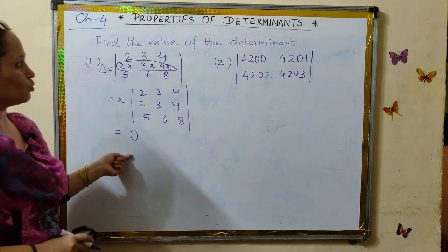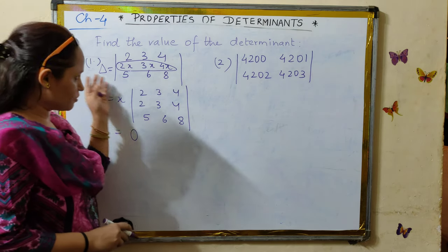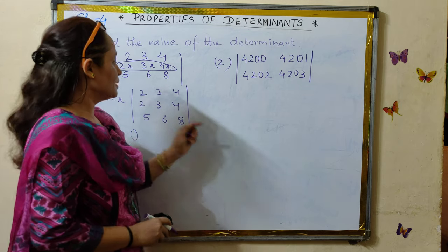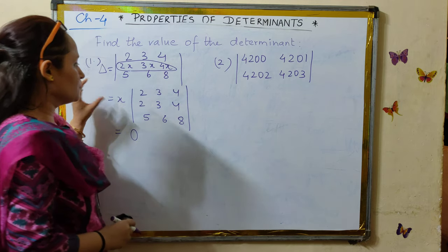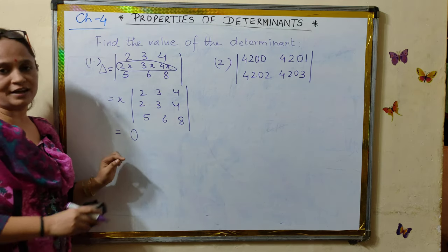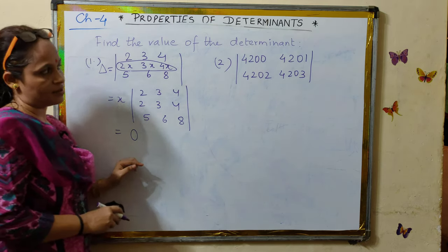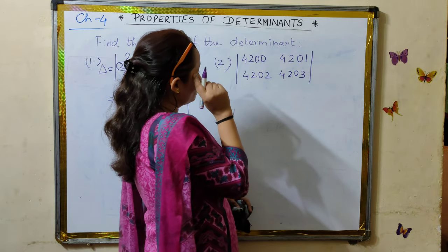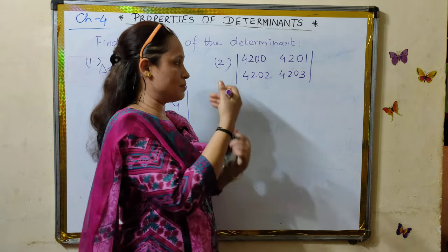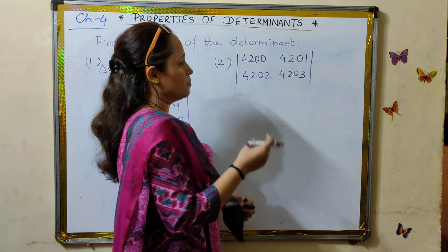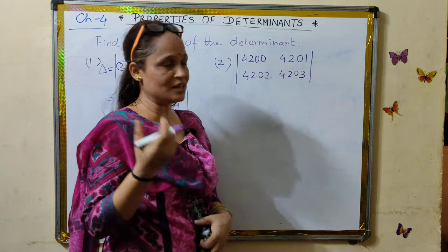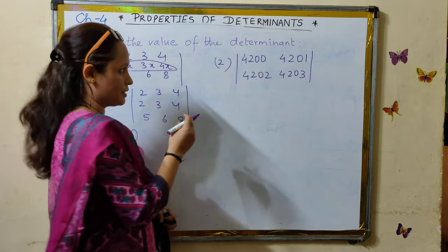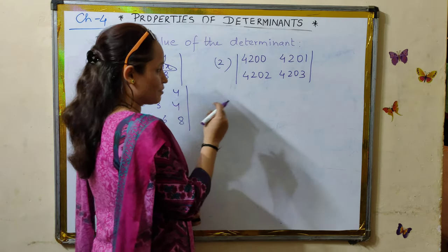Although you have done this question by expansion of the determinant along a row or a column, the usage of properties has simplified the task. We applied two properties: first, taking x common from the second row, and second, recognizing that two rows are identical. Now for the second question, we can also make it simpler using the properties of determinants.